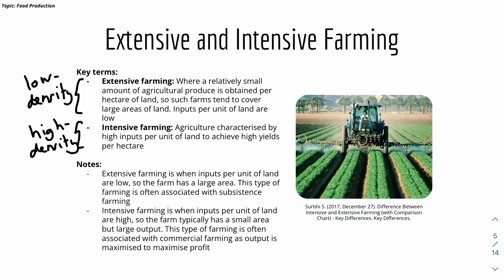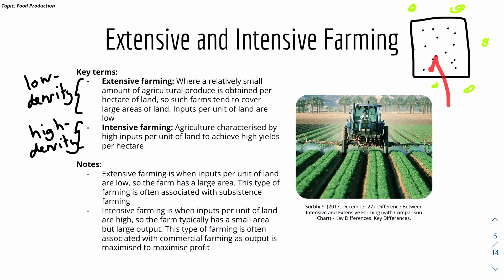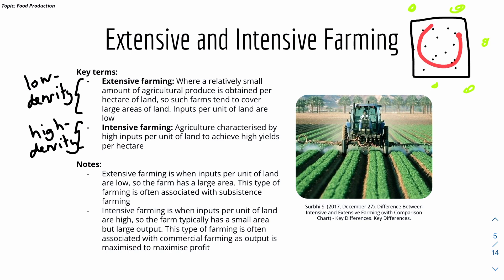Intensive farming has high inputs per unit of land and a typically small farm area. To illustrate: imagine a piece of land where inputs like seeds and fertilizer are applied. In extensive farming, there will be fewer seeds and less fertilizer per unit of land, leading to lower yield per hectare. In intensive farming, inputs are maximized to achieve high crop production density.